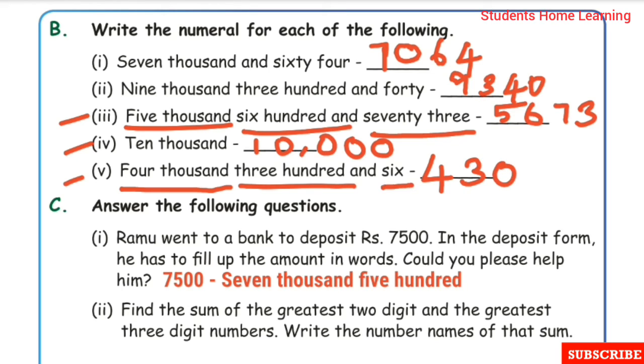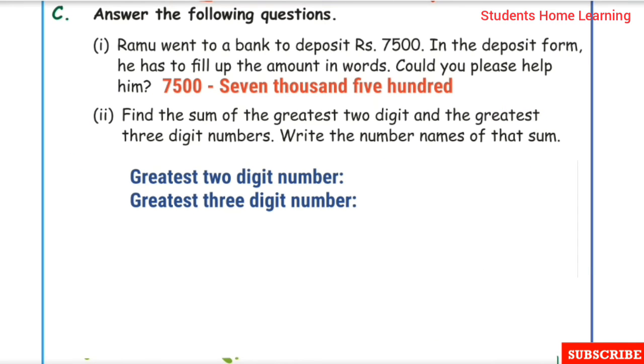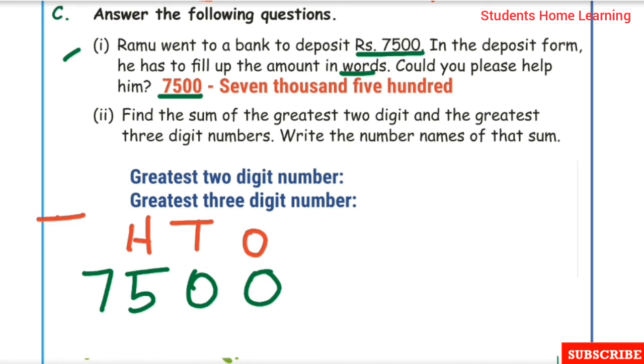Part C: Answer the following questions. Ramu went to a bank to deposit Rs. 7,500. In the deposit form, he has to fill up the amount in words. Could you please help him? Let's write the place value: thousands: 7,000, hundreds: 500, tens and ones: 0. The amount is seven thousand five hundred.